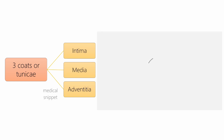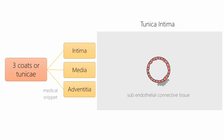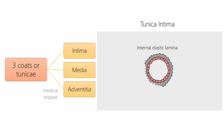The tunica intima is the thinnest layer of the arterial wall. It consists of endothelium, which is supported by the basement membrane. Endothelium consists of a single layer of simple squamous epithelium. Surrounding the basement membrane is a thin layer of sub-endothelial connective tissue. The last layer of intima is the internal elastic lamina, which is a fenestrated sheet of elastic fibers. It separates the intima from the tunica media and also allows diffusion of nutrients from the blood in the lumen to the inner part of the media.